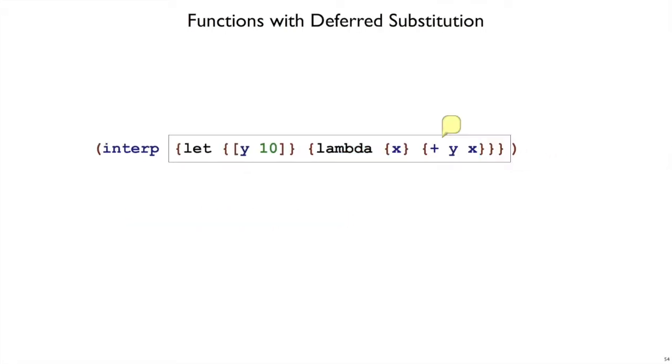Let's reconsider this example using a deferred substitution, writing it with a bubble, but we represent it with an environment. In that case, what should happen? We should end up interpreting a lambda expression where we still have y there, but there's a bubble here, a deferred substitution that says y should equal 10. How do we represent that when we produce the value from interp? We need to produce a lambda.